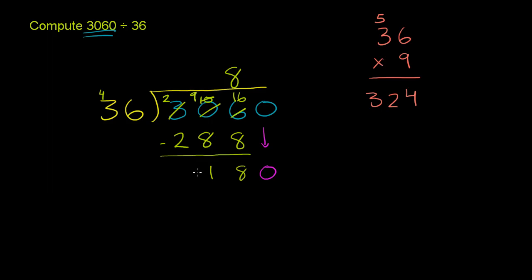So how many times does 36 go into 180? And once again, this is going to be estimation. It's not going to be 6 times. 6 times 30 would be 180. So 6 times 36 would be too big. Because 36 is bigger than 30. So let's try 5. Let's see if 5 works. So let's see.